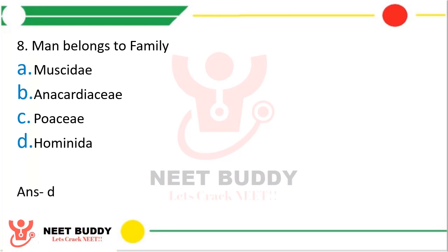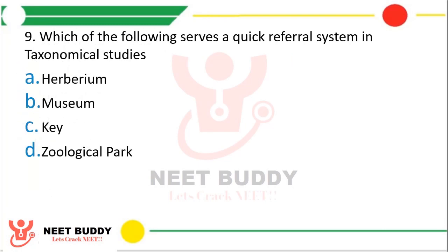Question 9. Which of the following serves as a quick referral system in taxonomical studies? Option A, Herbarium; Option B, Museum; Option C, Key; or Option D, Zoological Park. All four options are taxonomical aids. The correct answer is Option A, Herbarium. Herbarium is a taxonomical aid which serves the function of a quick referral system in various taxonomical studies.